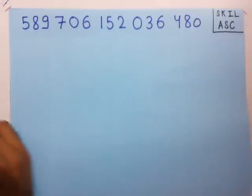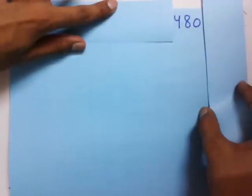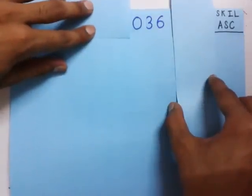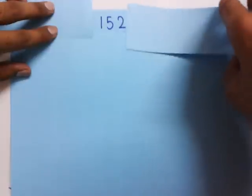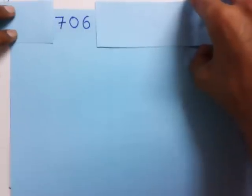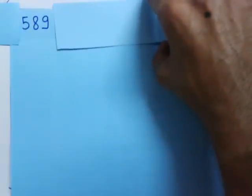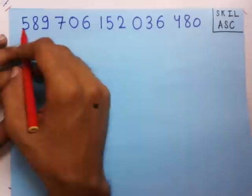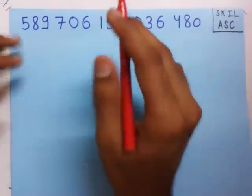So what we do is we read the smaller parts. We read 480, then 36, then 152, then 706, then 589. We observe that we can read smaller numbers, but we cannot read this very large number. So what we do is we break this very large number into smaller numbers.